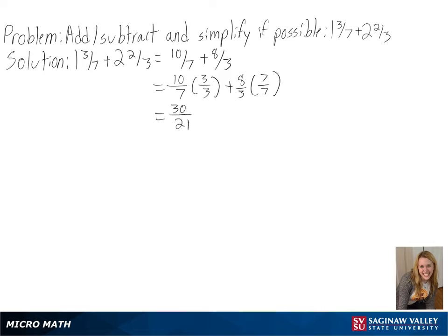We get 30 over 21 plus 56 over 21, and after adding, we get 86 over 21.